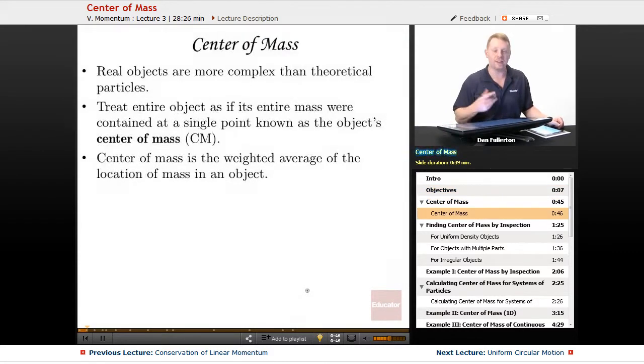So let's start by talking about what center of mass is. Real objects are more complex than these theoretical particles we've been dealing with. It's never just an entire amount of mass at some tiny point. Real objects are more irregular, they're more complicated than that.